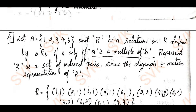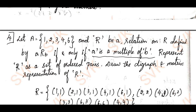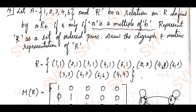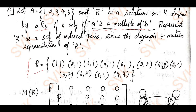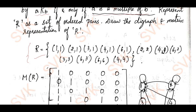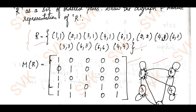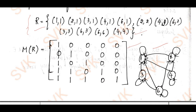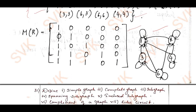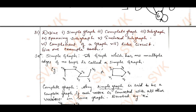Moving to the next question: given a set A and a relation R defined as 'a is related to b if a is a multiple of b,' I find the relation R and write it down. Using this relation R I write the matrix, and from the matrix I draw the digraph. If you have got this, you are going to score full marks in this question.